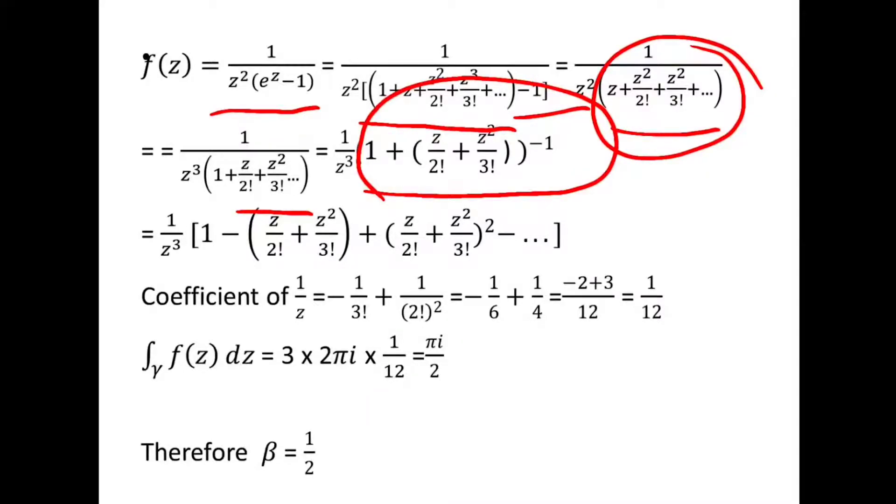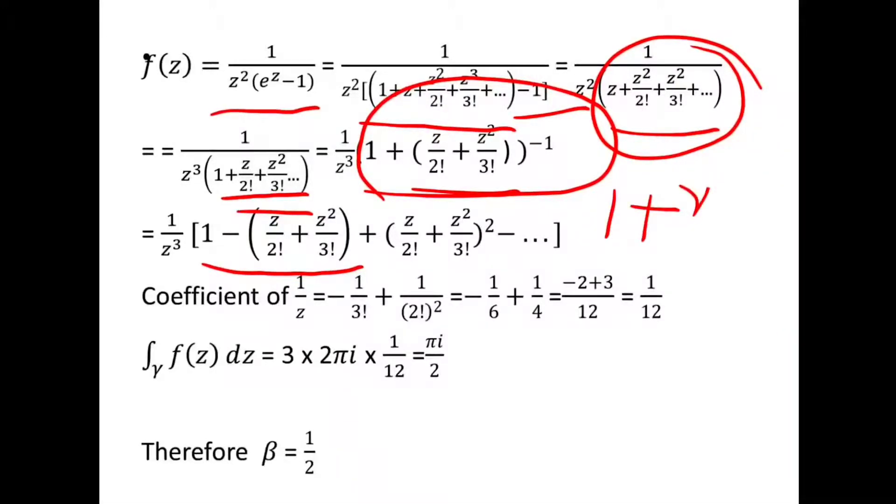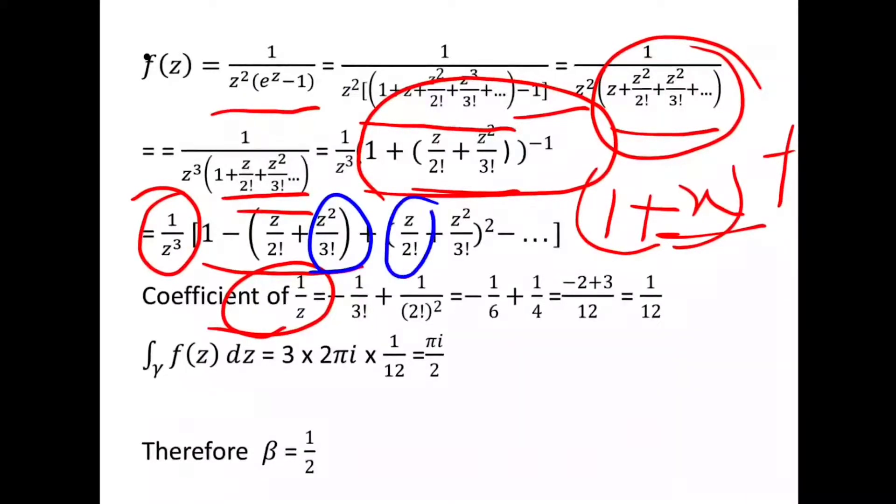z = 1/(z³[1 + z/(2!) + z²/(3!) + ...]). Now I take only these two terms in this expansion. The remaining terms of higher power—we need only to find the coefficient of z. Now expand the series (1 + x)^(-1). This series expansion is used here.